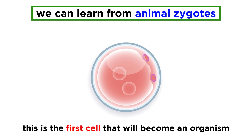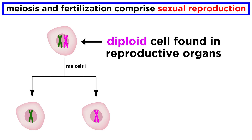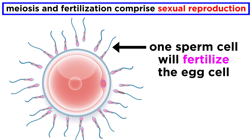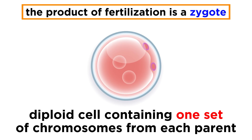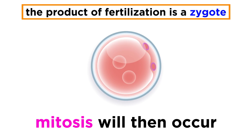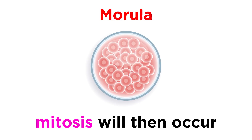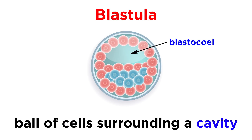We can learn a lot about this by looking at an animal zygote. Animals reproduce sexually, with meiosis in the reproductive organs yielding haploid gametes — those being a sperm and an egg. When the sperm fertilizes the egg, this yields a zygote, a single cell with all of the genetic information from both parents. This will undergo cleavage due to mitosis, to yield two cells, then four cells, then eight cells. This eventually results in a blastula, which is a hollow ball of cells surrounding a cavity called a blastocele.